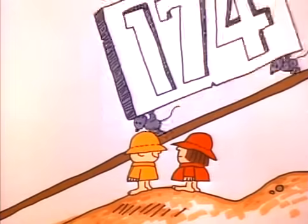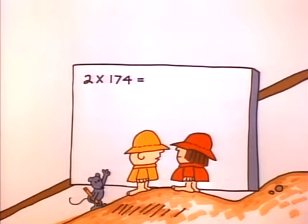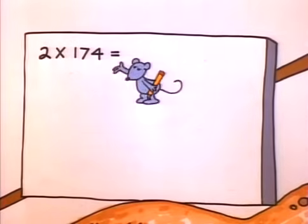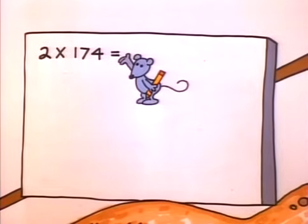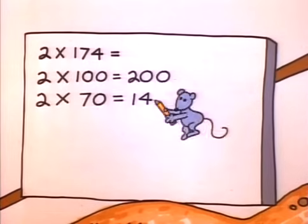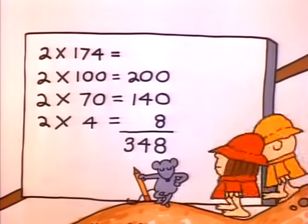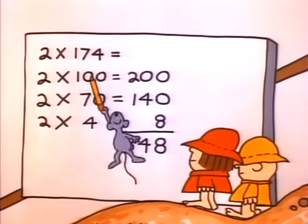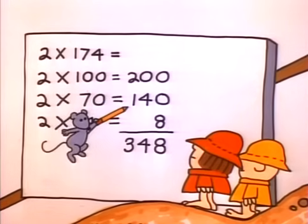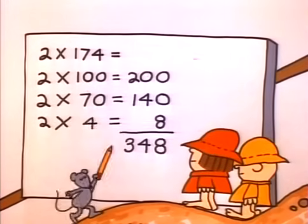Now if you want to multiply two times a hundred and seventy-four, or some big number like that — two times a hundred and seventy-four equals two times a hundred, plus two times seventy, plus two times four. That's all. So two times a hundred and seventy-four equals two hundred plus a hundred and forty plus eight.